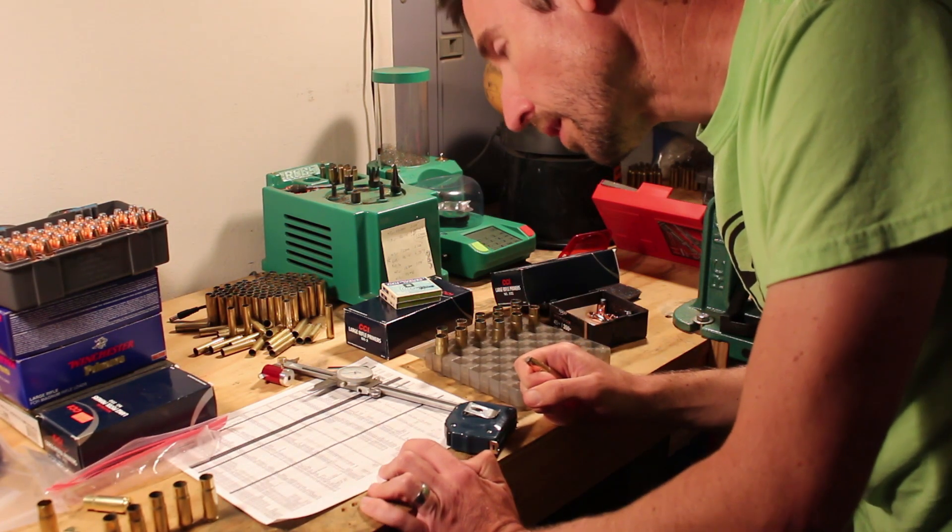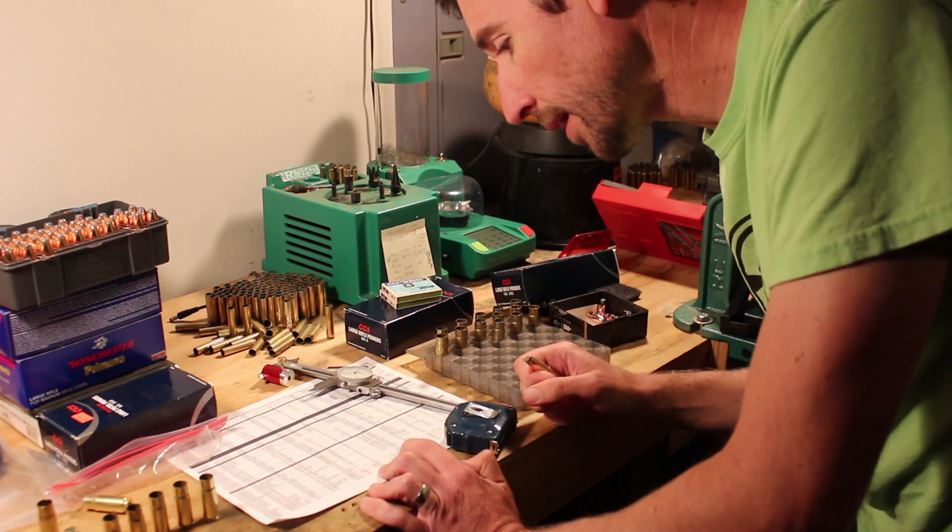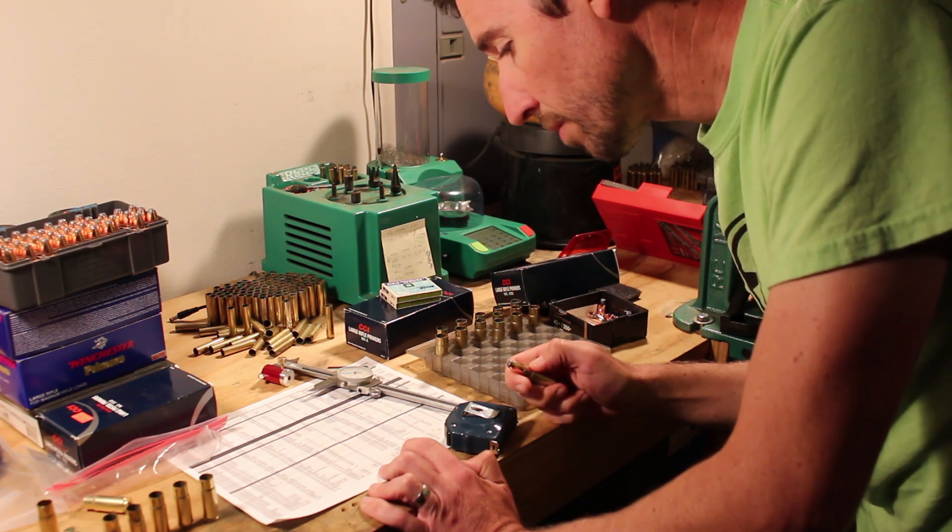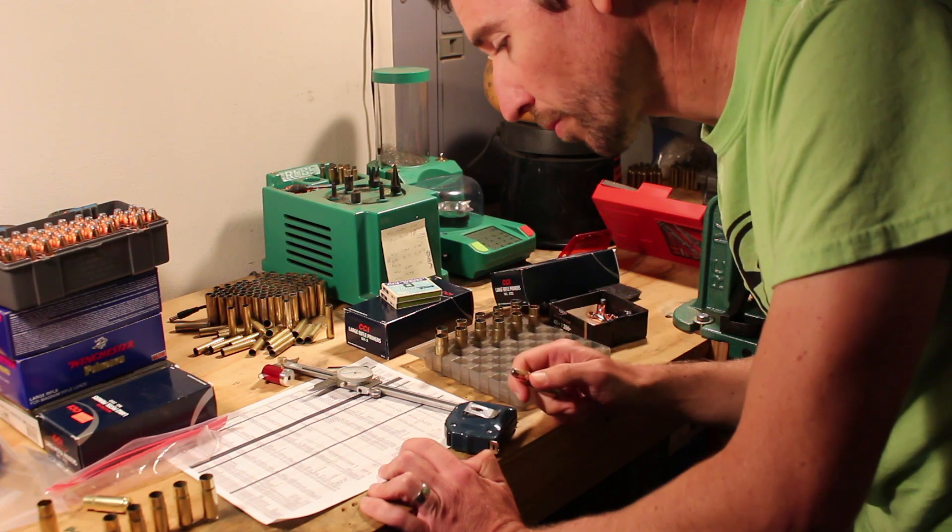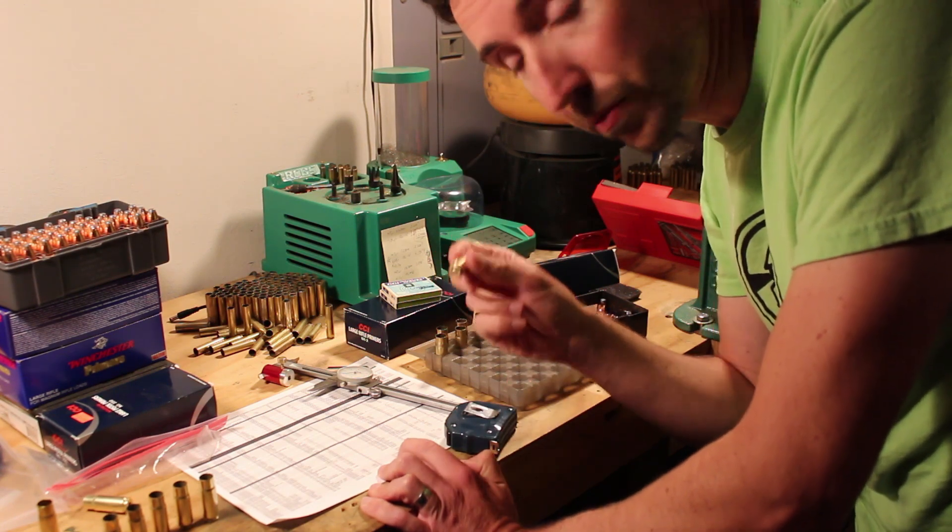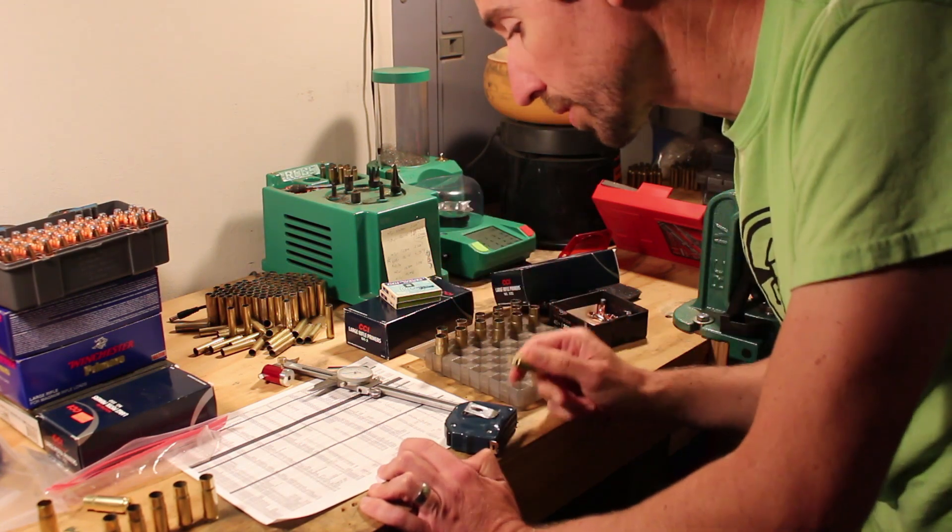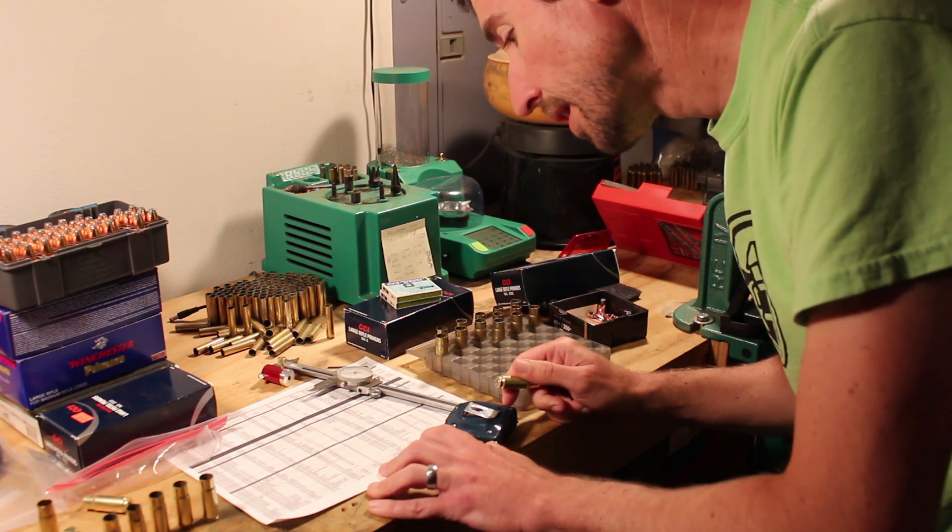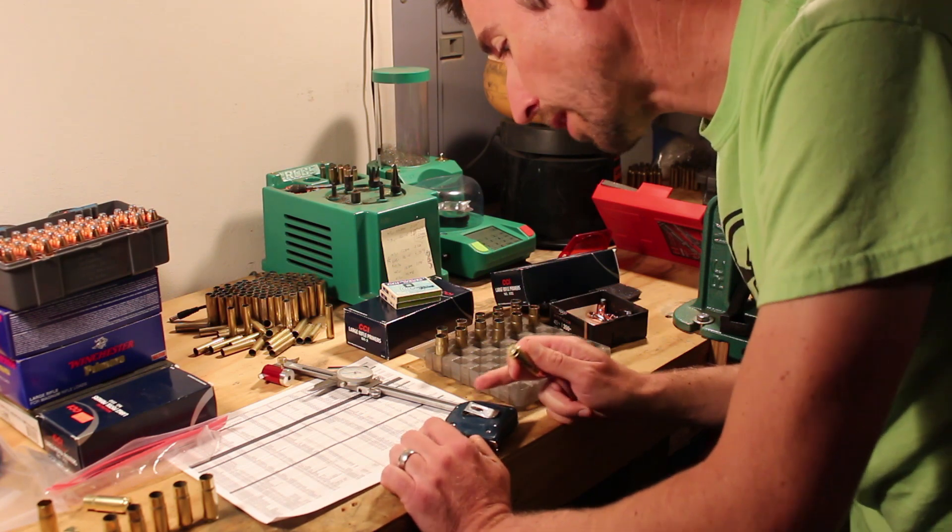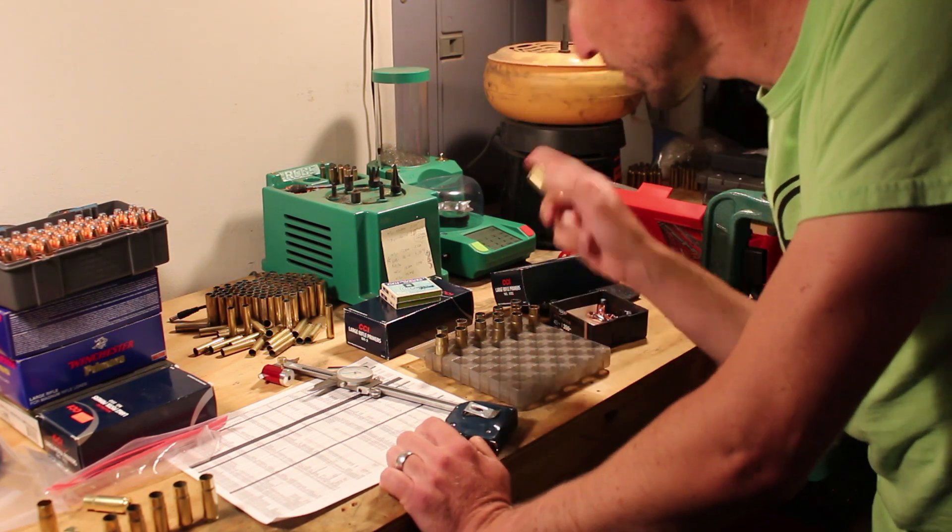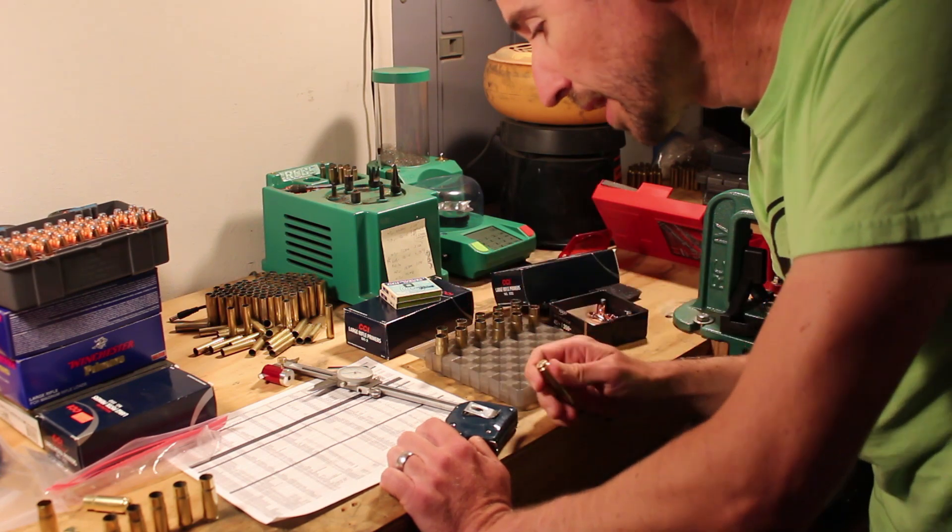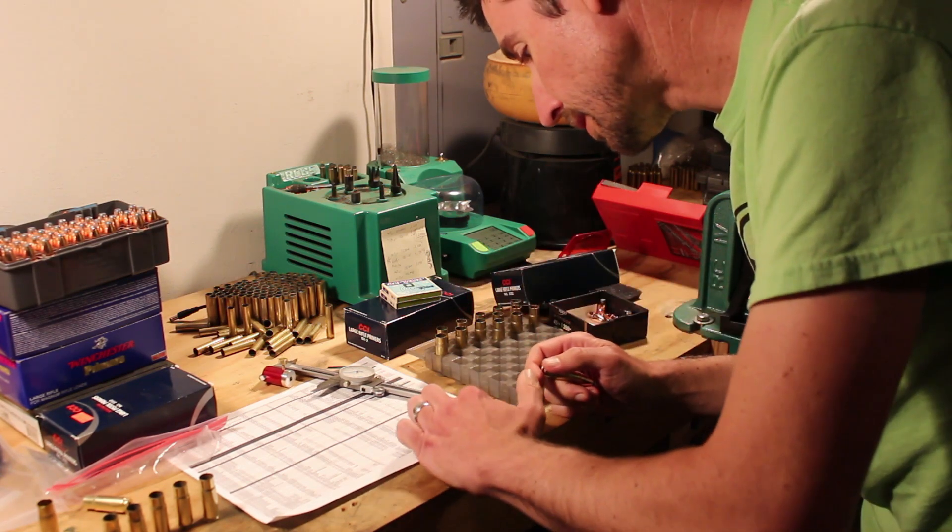Yeah these are CCI mag primers, these are pistol primers, that way they can kind of keep track of the pressures on here. These are actually kind of low pressure compared to a lot of the others. 33.0 grains of Hodgdon H110 in there.